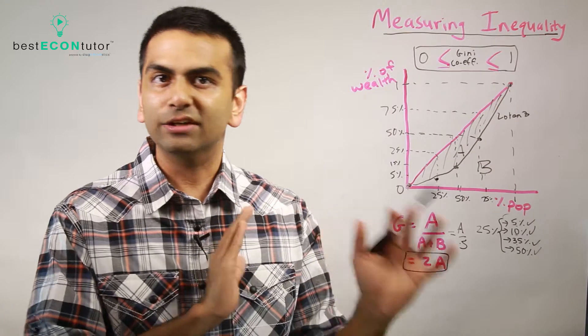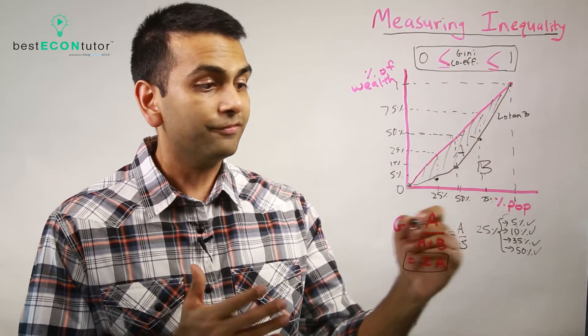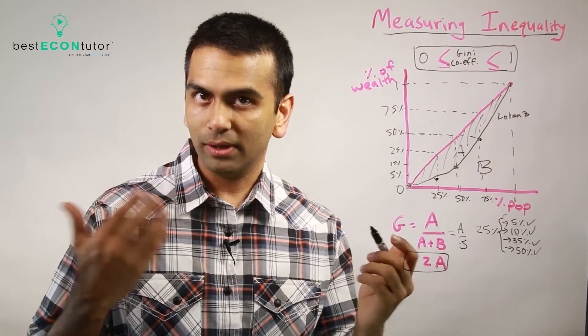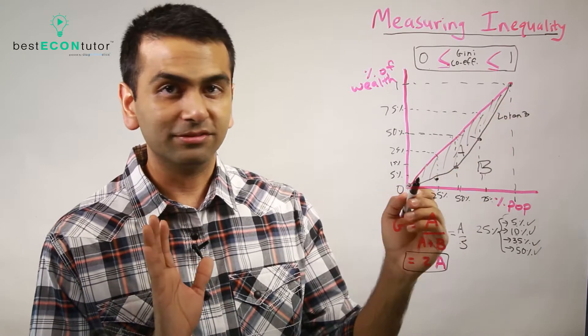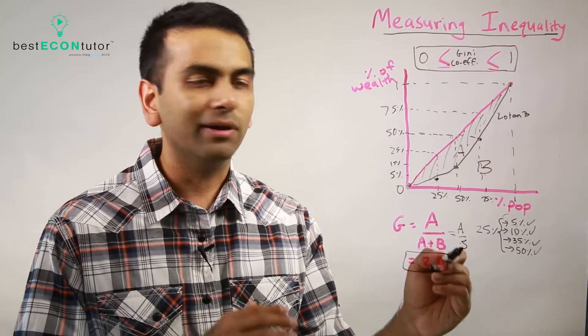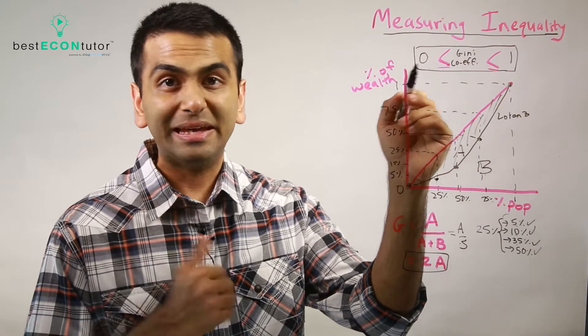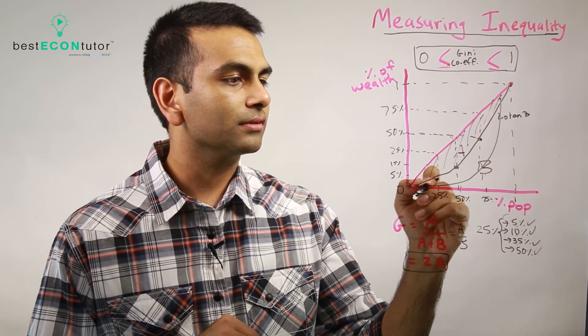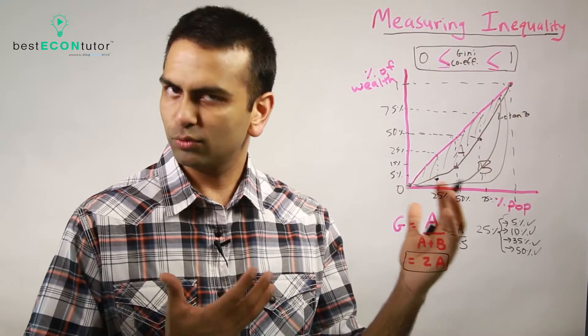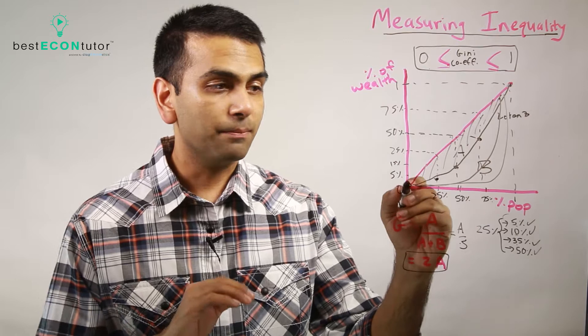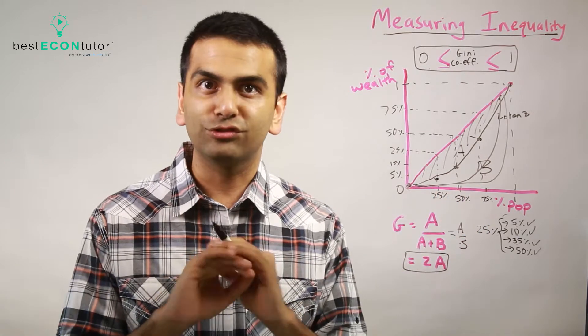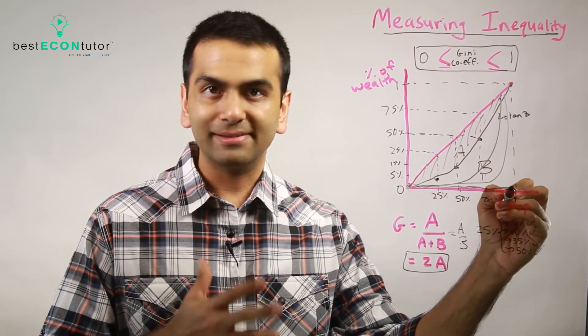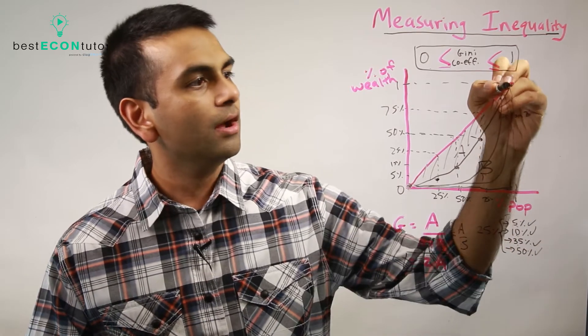Now, here's the thing. If we were to look at some of the extreme examples, like I talked about, if you do have a society where everyone has the same amount of money, then your Gini coefficient is 0. So 0 means perfect equality because in that case, the black and red lines are the same one and so area A is 0. So 0 out of 0.5 is still 0. So that's why there's no inequality.